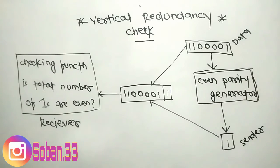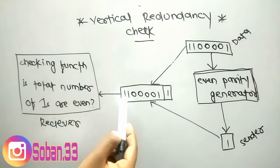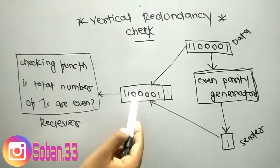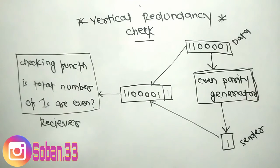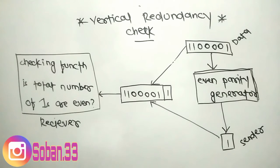If the receiver sees 1 1 1 0 0 0 0 1, it counts four ones — an even number — and the data unit passes.